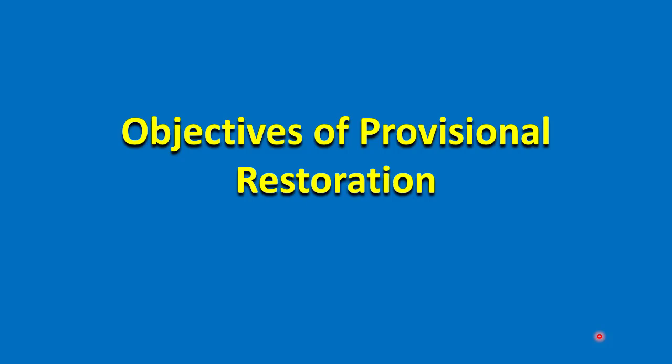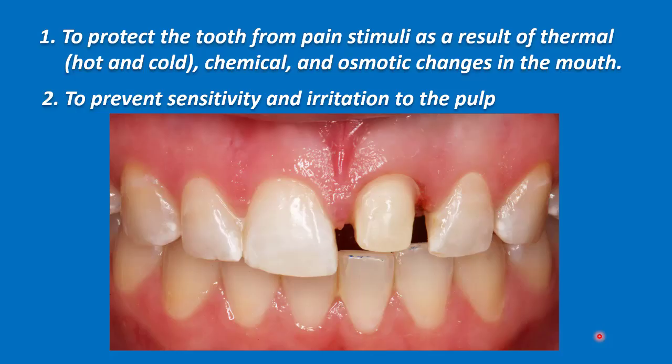The objectives of provisional restorations: First, to protect the tooth from pain stimuli as a result of thermal, chemical, and osmotic changes in the mouth. As you can see here, after preparation most of the enamel is removed, exposing the dentine, which is sensitive to pain by hot, cold, and chemical changes.